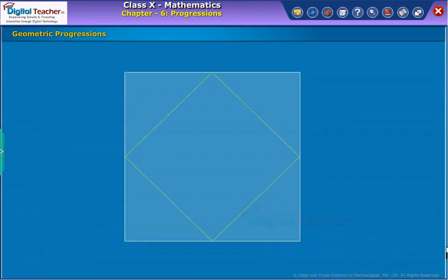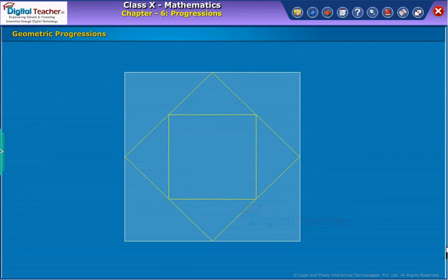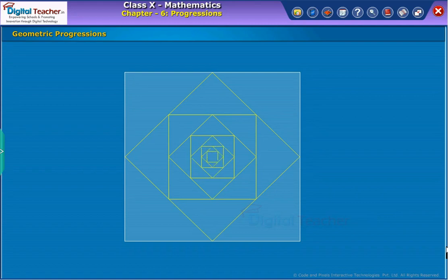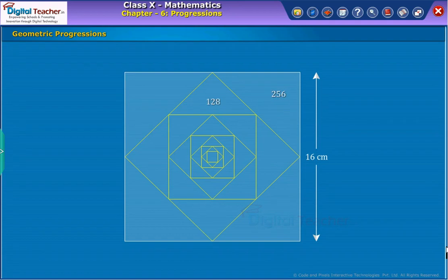A square is drawn by joining the midpoints of the sides of a given square. A third square is drawn inside the second square in the same way and this process continues indefinitely. If a side of the first square is 16 cm, then the area of first, second, third, so on squares will be respectively 256, 128, 64, 32 and so on. And here, successive terms are obtained by dividing the preceding number with 2.